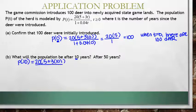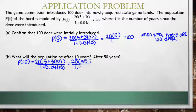...gives us 20 times 35 all over 1.4. So 20 times 35 is 700 divided by 1.4, which is 500 deer.